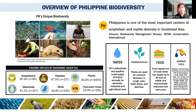The Philippines is one of the most important centers of amphibian and reptile diversity in Southeast Asia. For water, the watersheds and aquifers could supply about 479 billion cubic meters annually for domestic, industrial, and agricultural uses. For pharmaceuticals, plants are used for common illnesses like calf pain, tooth decay, and diarrhea.